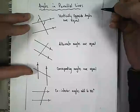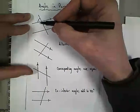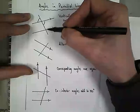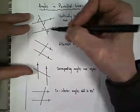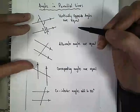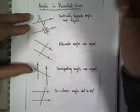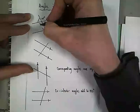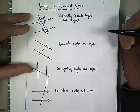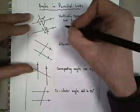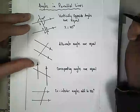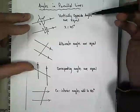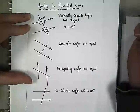Vertically opposite angles are those angles that are opposite each other where two lines cross. We've got pairs of vertically opposite angles at each intersection — let's call one pair A and A, and the other pair B and B. If we're given that one angle is 105 degrees and we want to find X, then X equals 105 degrees, because vertically opposite angles are equal.